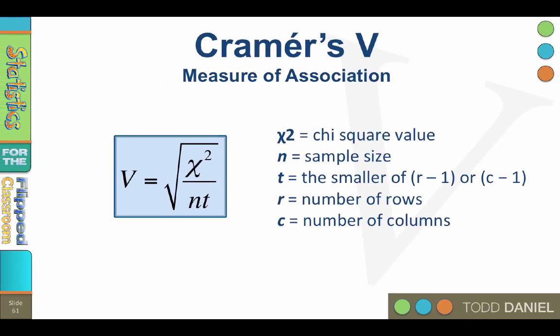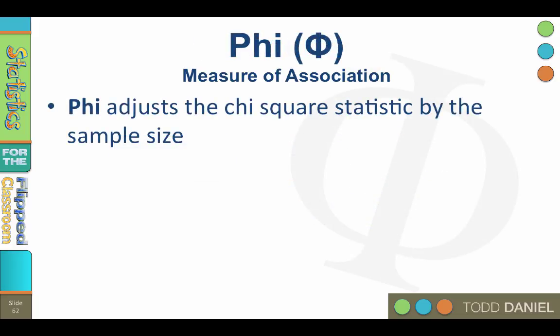However, there is a much more simple formula that you can use for a one-way chi-square, and it is based on another measure called phi. Phi is a Greek letter that rhymes with my, and pi, and chi.